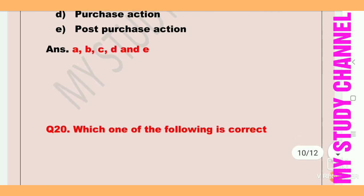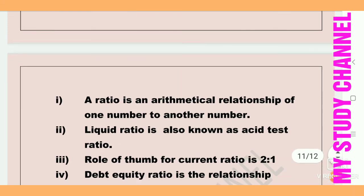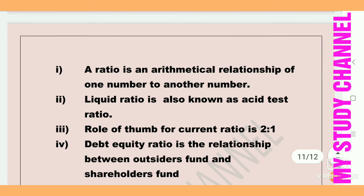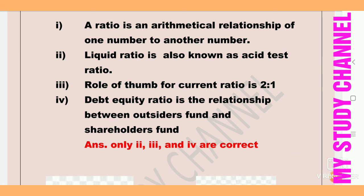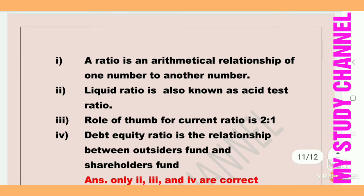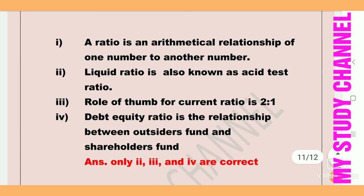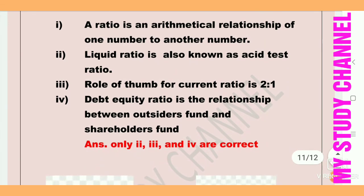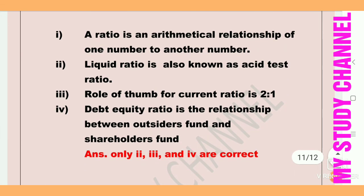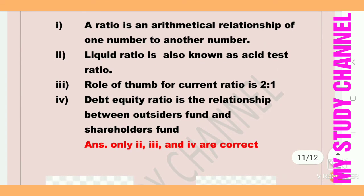Next question: which one of the following is correct? First — a ratio is a mathematical relationship of one number to another. Second — liquid ratio is also known as acid test ratio. Third — rule of thumb for current ratio is 2:1. Fourth — debt equity ratio is the relationship between outsider funds and shareholder funds. The answer is second, third, and fourth are correct. Liquid ratio as acid test ratio is correct, rule of thumb for current ratio as 2:1 is correct, and the fourth statement is also correct.